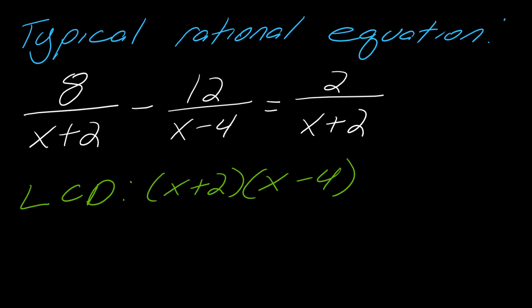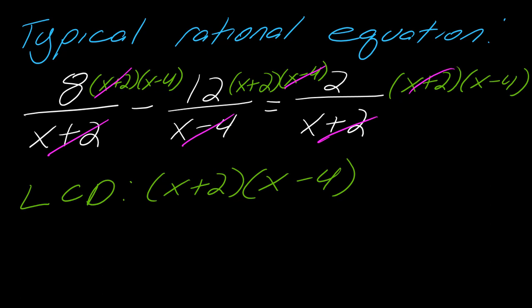First of all, the first thing I have to do is figure out the LCD. In this case, as I look across, it'd be (x+2) and (x-4). Then I'd go through and multiply each part of this equation by that LCD.